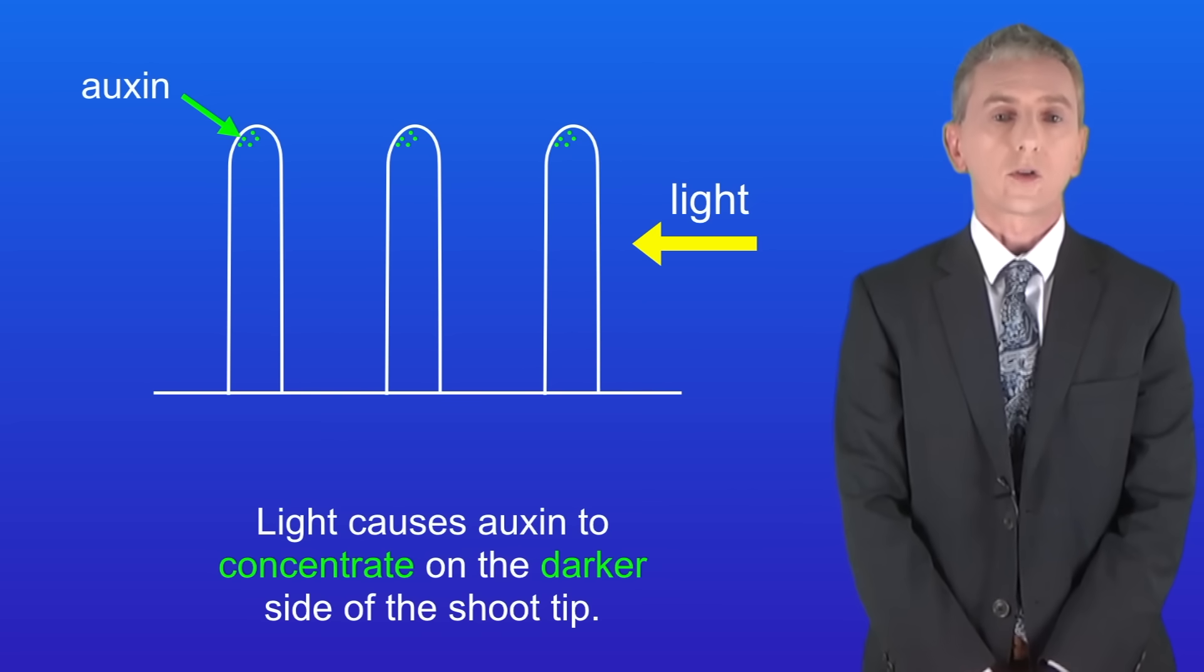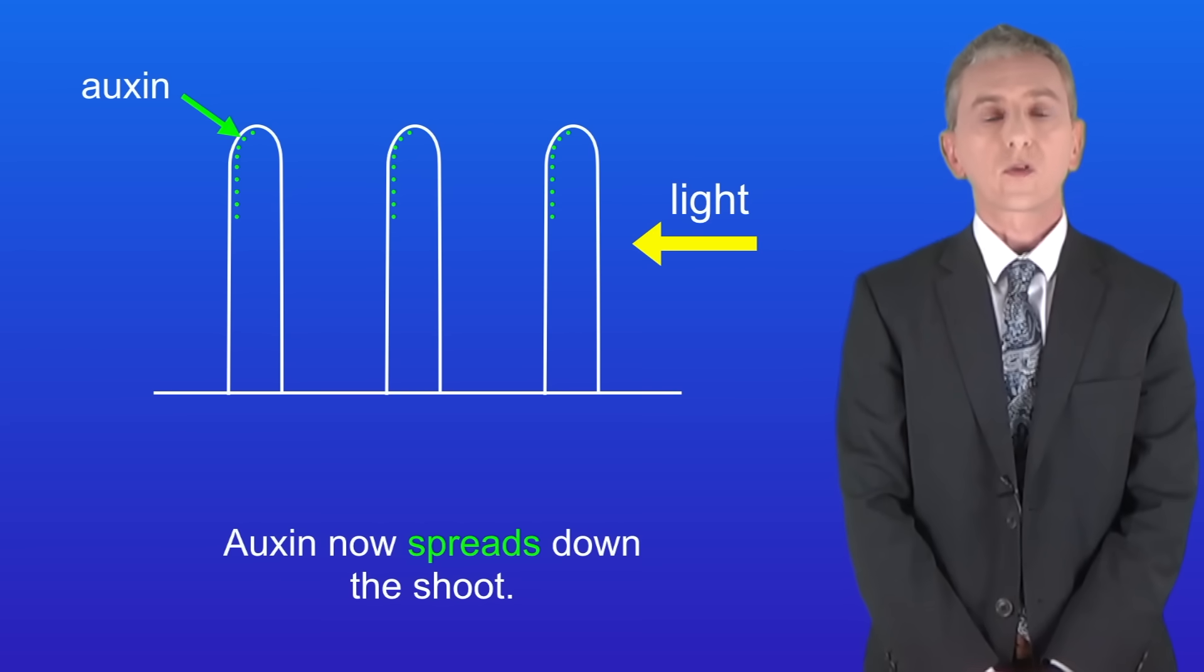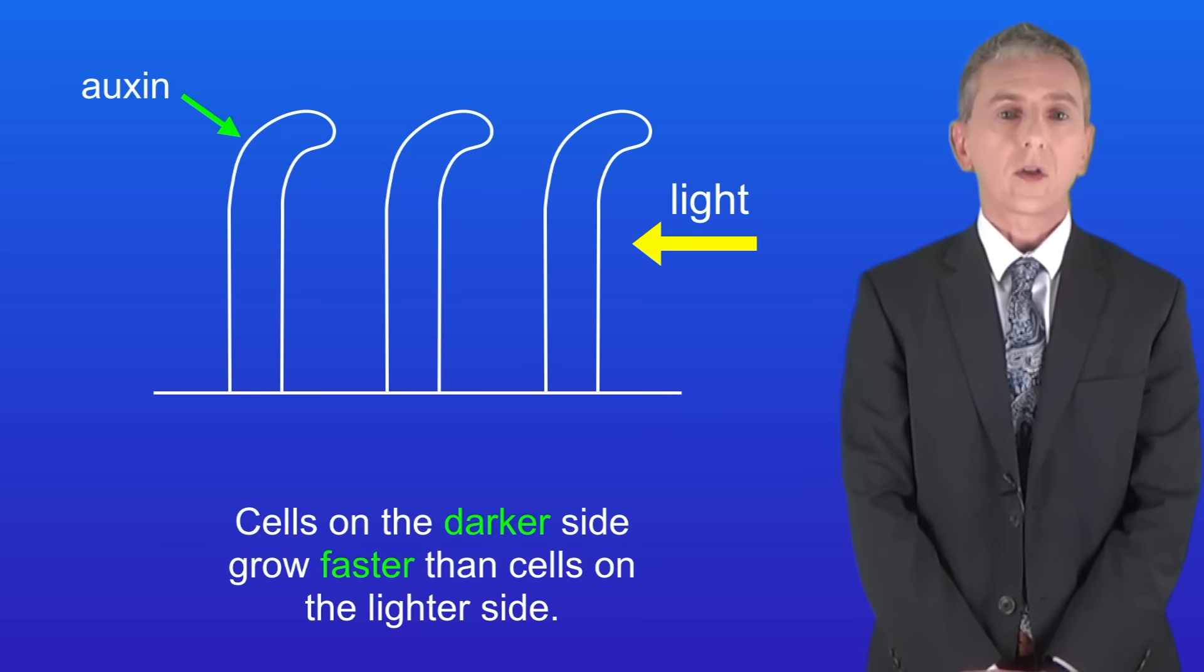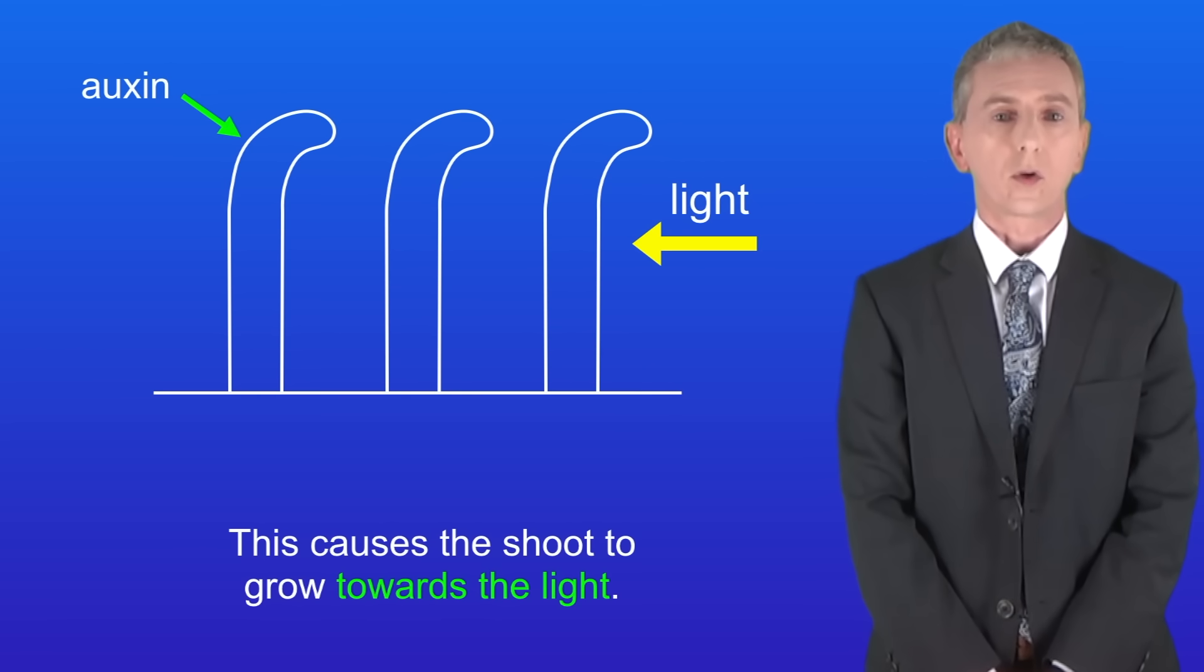Light causes auxin to concentrate on the darker side of the shoot tip. Auxin now spreads down the shoot, so cells on the darker side grow faster than cells on the lighter side. This causes the shoot to grow towards the light.